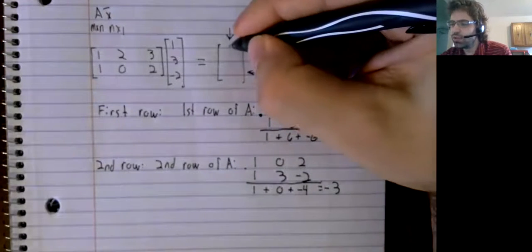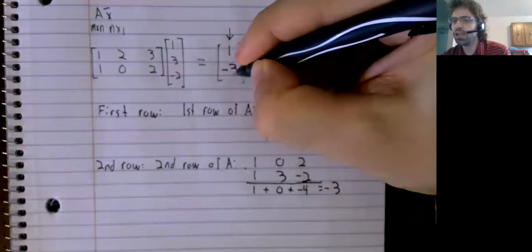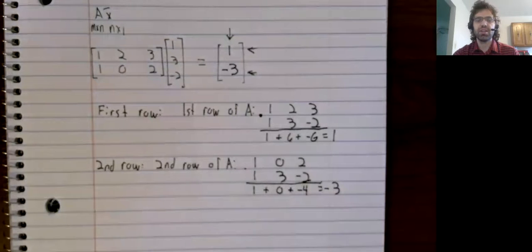So we're claiming this product is that vector, 1, negative 3.